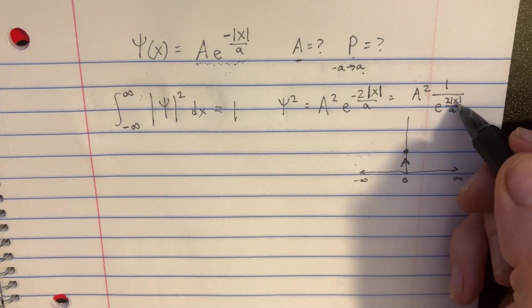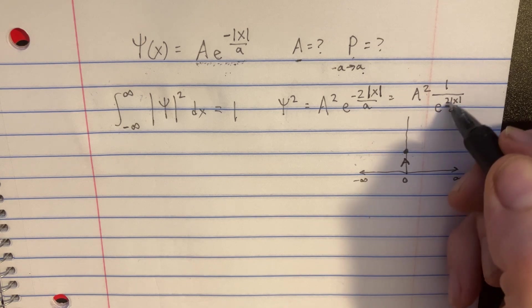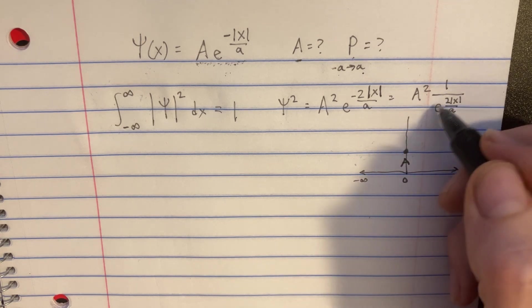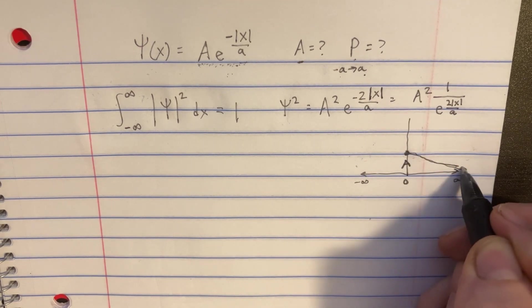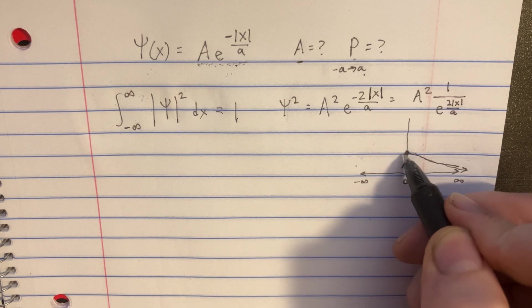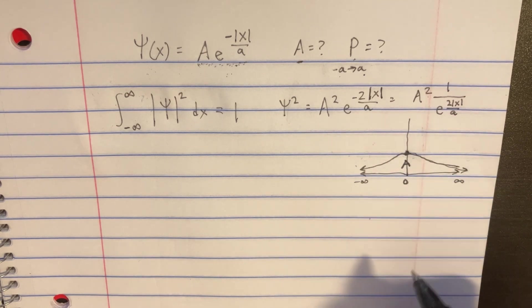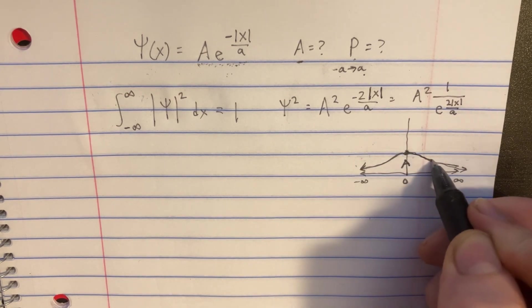And then as we move this to infinity, then this number here on the bottom is going to get really big, and we're going to get a 0 here. So essentially, this thing is just heading down towards 0 over here. And then, of course, since it's the absolute value, it's going to do the same behavior on the other side. So we get this idea.